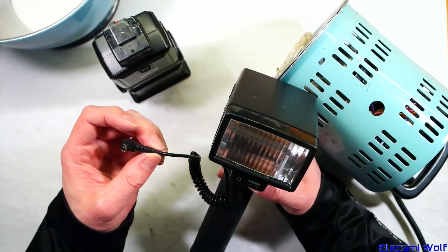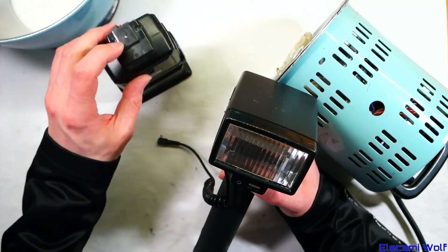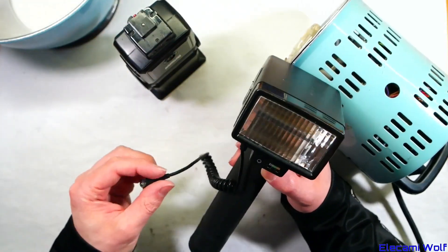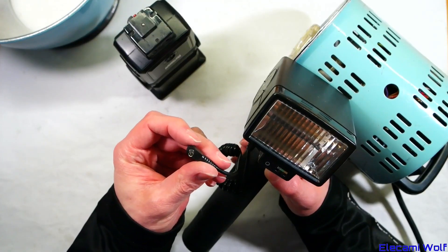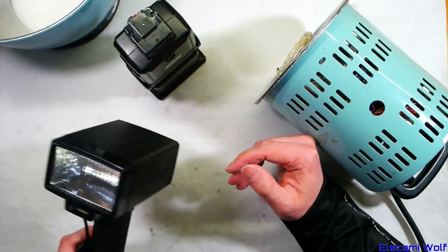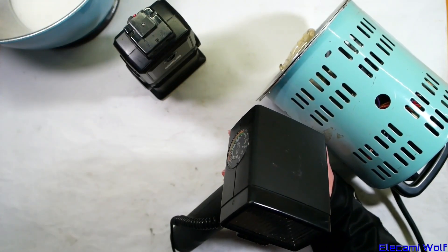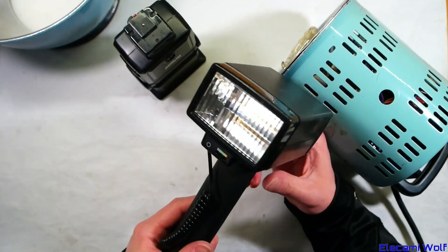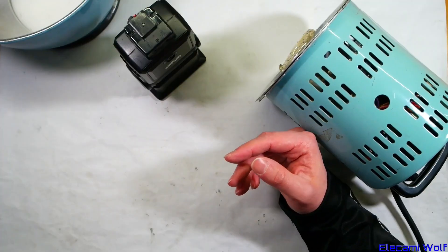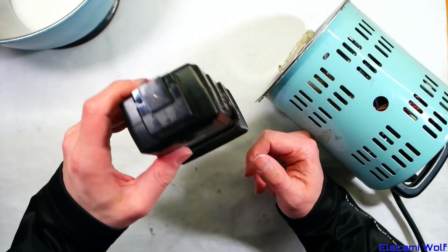Because these older flashes usually have a very high sync voltage, the voltage between those two pins there and there, that get connected together to fire the flash. Measure it with a multimeter - if there's more than about 12 volts, don't connect it to your camera, otherwise you'll probably blow it up.